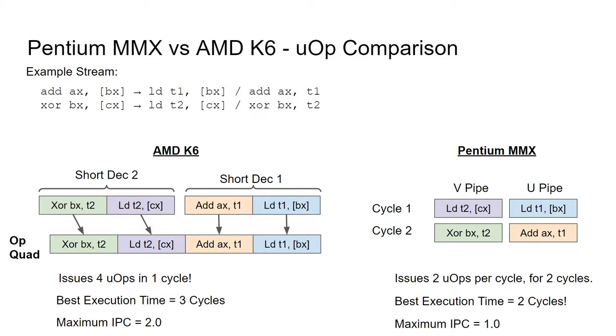The Pentium MMX, on the other hand, can only issue two micro-ops per cycle, and thus needs to stretch the execution out over two cycles. In exchange, the Pentium MMX is able to execute all four micro-ops over the course of two cycles instead of three cycles. But in that time frame, no other micro-ops could be executed.